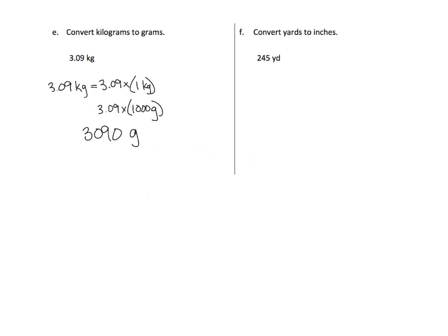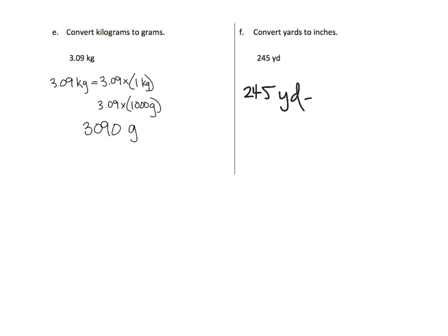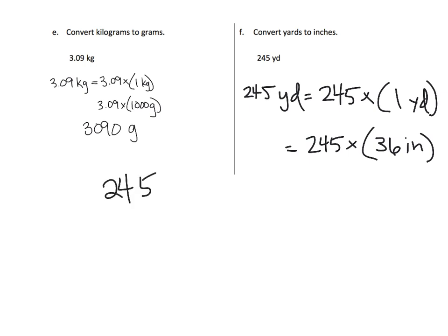And so, we end up with 3,090 grams. Alright, so I'm going to take that, I'm going to shrink it down. And now, let's take a look at this one. So, converting yards to inches. So, we've got 245 yards. 245 yards. So, that's really 245 copies of 1 yard. And then, so that's really 245 copies of, now it says inches. So, 1 yard, we need to change into inches. So, that is 36 inches. So, now we end up having 245 copies of 36 inches. So, we're going to go over here on scratch paper, and we're going to do 245 times 36.